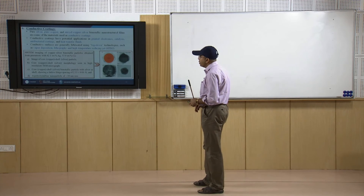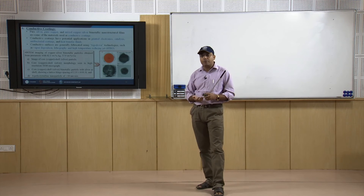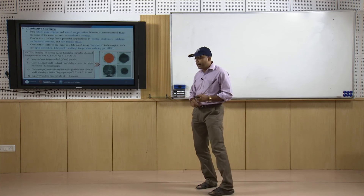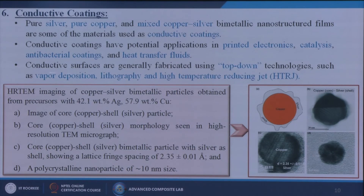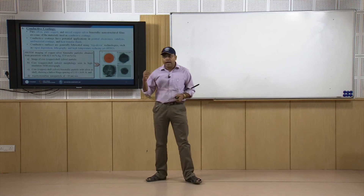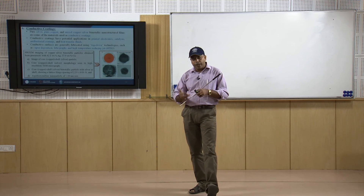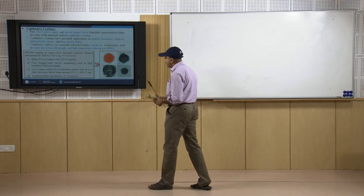Next we discuss conductive coatings. By changing the outer surface of a material we can make it go from non-conductive to conductive. Pure silver, pure copper, and mixed copper-silver bimetallic nanostructure films are some of the materials used as conductive coatings. Conductive coatings have potential applications in printed electronics, catalysis, antibacterial coating, and heat transfer fluids. Conductive surfaces are generally fabricated using top-down technologies such as vapor deposition, lithography, and high-temperature reducing methods. Highly conductive fillers are used, and by giving a coating on the surface we change the material properties from non-conductive to conductive.